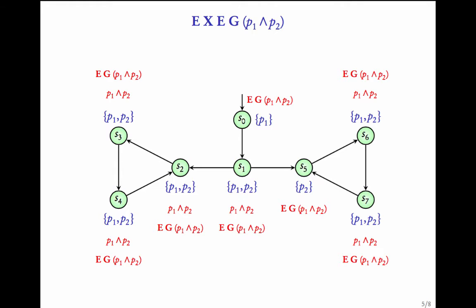In the next step, we remove the label EG(P1 ∧ P2) from all states where P1 ∧ P2 is not true. So S0 and S5 do not satisfy P1 ∧ P2, so we first remove the label EG(P1 ∧ P2) from these two states. Then, according to the algorithm, if every successor of a state does not have the label EG(P1 ∧ P2), we remove the label from that state as well. So we remove it from S7 and S6 for the same reason.